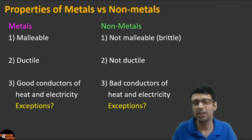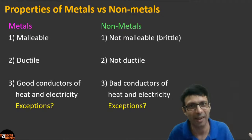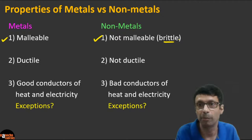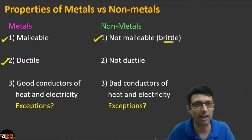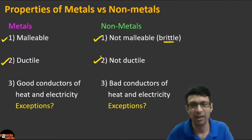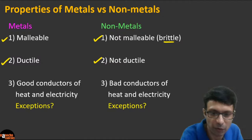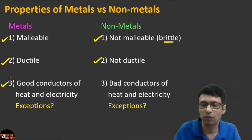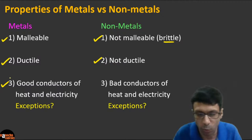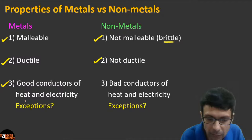Let's compare properties of metals and non-metals. Metals are malleable; non-metals are non-malleable or brittle — they cannot be beaten into thin sheets. Metals are ductile; non-metals are non-ductile — you cannot make wires out of non-metals. Metals are usually good conductors of heat and electricity — like copper, iron, silver, and gold.